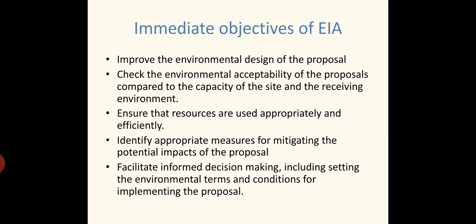Another objective is to identify appropriate measures for mitigating the potential impacts of the proposal. If, by doing EIA, we find that there is an adverse effect on the environment, we will go for alternative options — how we can reduce that effect through redesigning and other means. If any adverse effect is found, alternative options are introduced to reduce the effect on the environment. That is another immediate objective.